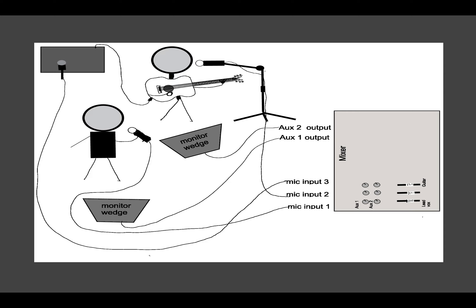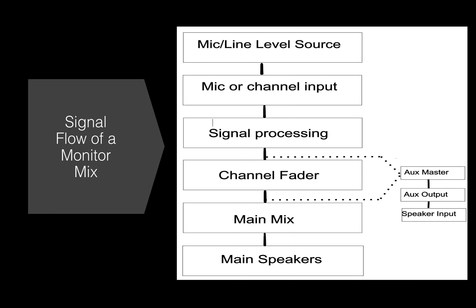Here I've also added a guitar player, and he also sings backing vocals, so we have two more inputs: his vocals coming in on channel two and his guitar coming in on channel three. Because we have another wedge, we have to use another aux output. Aux output two goes into the input of the guitarist's monitor wedge, and then we start mixing. Say the guitar player wants to hear a little bit of vocals in his monitor — I'm going to go to the lead singer's vocal channel and raise aux two. If the lead singer wants to hear guitar, I'm going to go to the guitar channel and raise aux send one.